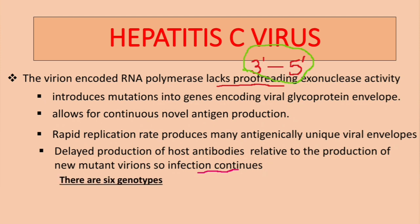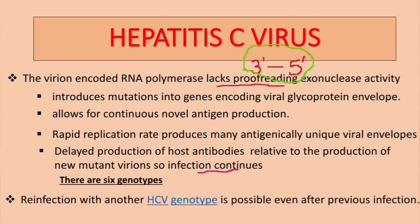There are about 6 genotypes. Type 1, particularly in the United States, causes about 85% of cases, and genotype 2 causes around 10-15%. It is possible to be reinfected with another HCV genotype after a previous infection.